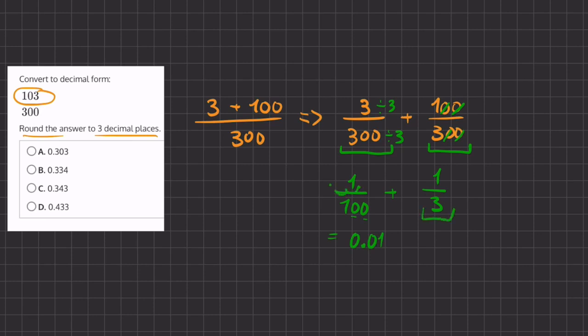And now we're going to take our 1 third and we're going to turn it into 0.333. It goes on forever.